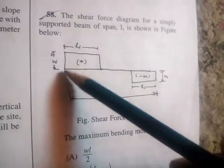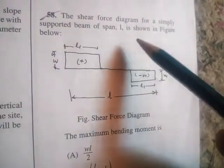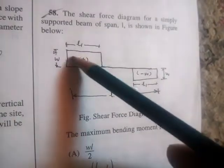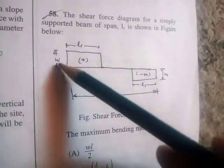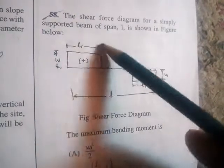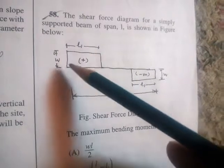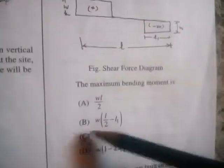Next question: the shear force diagram for a simply supported beam — the bending moment diagram is the area of the shear force diagram. With width w and length L1, the bending moment will be L1²·w/2. The correct answer is C.